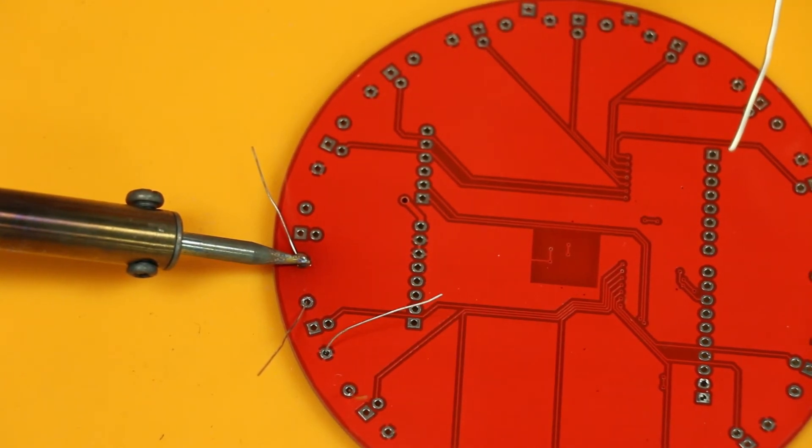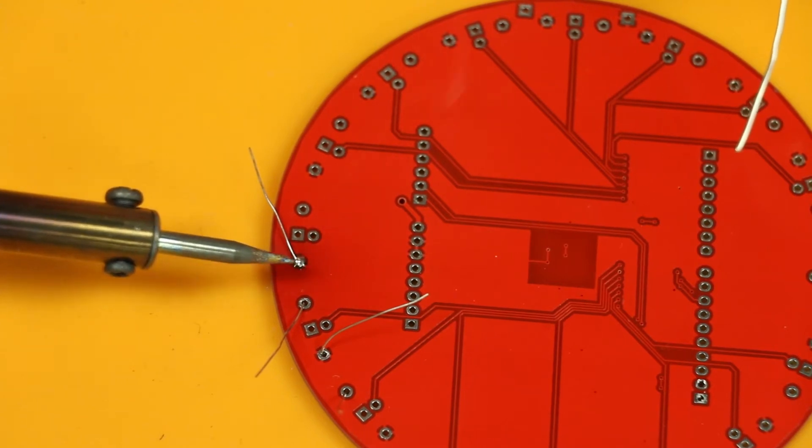You still want to hold it down. Then you can remove your soldering iron. And that's a solder joint.